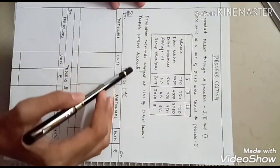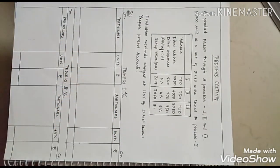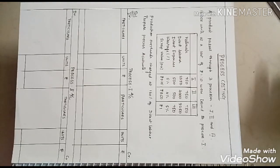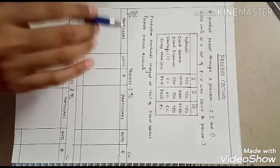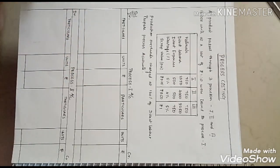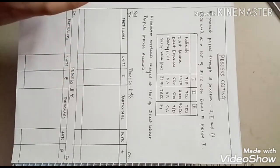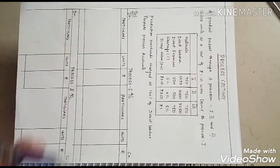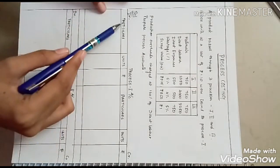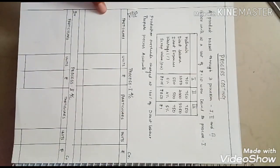Production overheads are charged at 160% of direct labor. Prepare process accounts. A process account is nothing but a ledger account, with a debit side as well as a credit side.